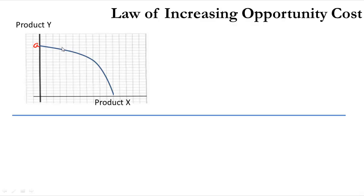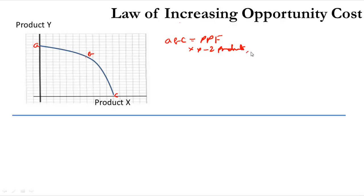Let us consider A, B, C as production possibility function. Now we are trying to explain the law of increasing opportunity cost using this production possibility function, which has X and Y as two products. All other assumptions of production possibility function hold good: scarce resources, highest efficiency, and full employment of resources.